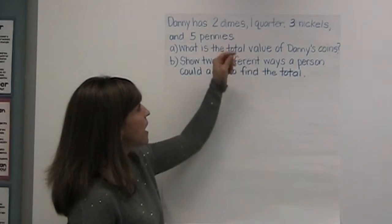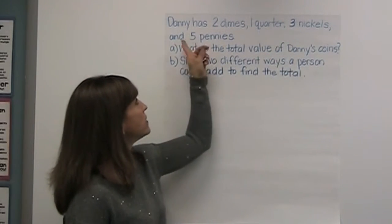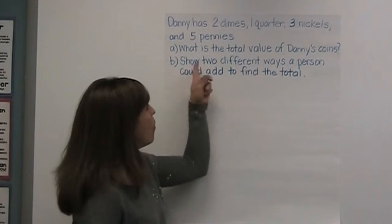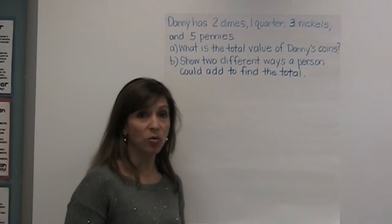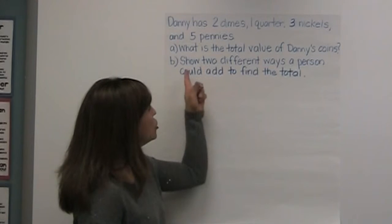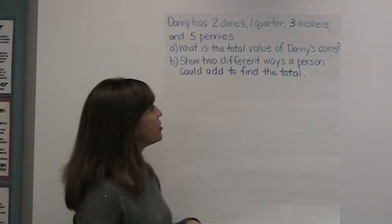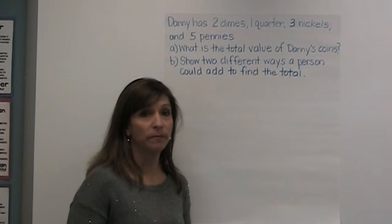Danny has two dimes, one quarter, three nickels, and five pennies. Part A says what is the total value of Danny's coins? Part B shows two different ways a person could add to find the total.